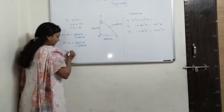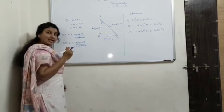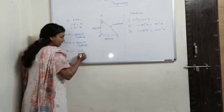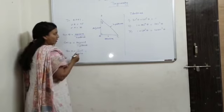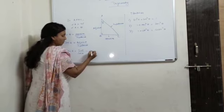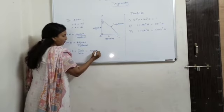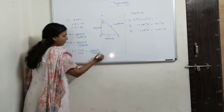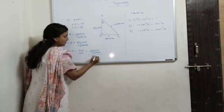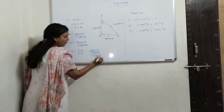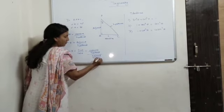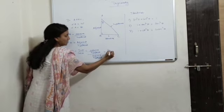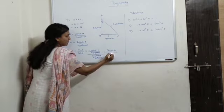And for tan theta, the formula is, as you know tan theta is sine theta upon cos theta, correct. So you can from here only you will get the formula. Sine theta upon cos theta is what? Opposite upon hypotenuse divided by adjacent upon hypotenuse. So here hypotenuse and hypotenuse will get cancelled. So answer is opposite upon adjacent.